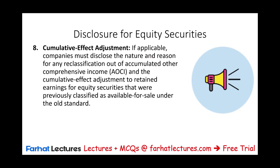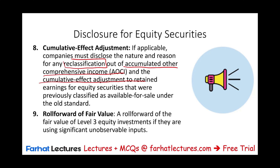Other disclosures include cumulative effect adjustments. If applicable, companies must disclose the nature and reason for any reclassification out of AOCI and the cumulative adjustment to retained earnings — for example, when you sell an investment and move a gain or loss from AOCI into net income and therefore retained earnings, you must explain this in detail. We also need a roll forward of fair value: starting with year one, what are the changes to arrive at year two? Basically a rollover of fair value for equity using significant unobservable inputs — meaning you don't have enough public data and are using your own data, which makes those investments riskier.